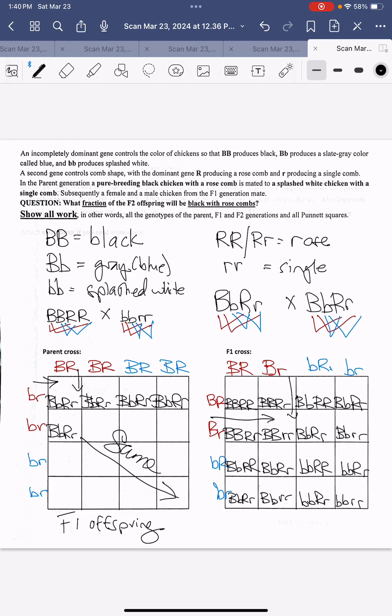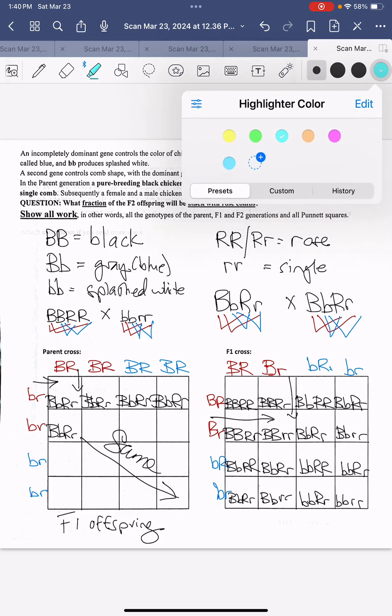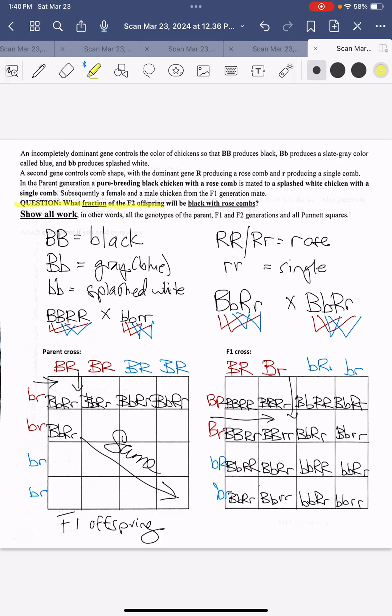Now let's go back to the question. What was the question that was asked of us? What fraction of the F2 offspring will be black with a rose comb? So we are looking for black, big B, big B. Let's underline all the big B, big Bs. There's four of them. Nothing else is a big B, big B.